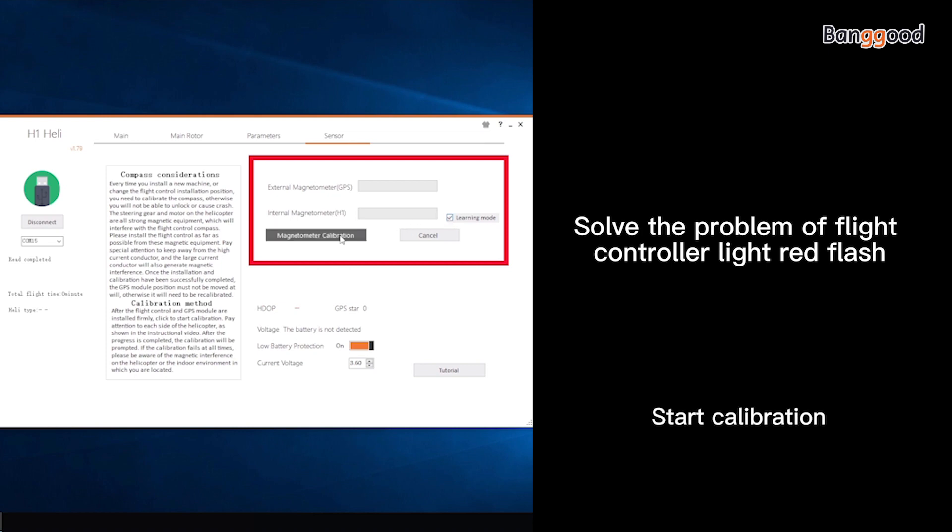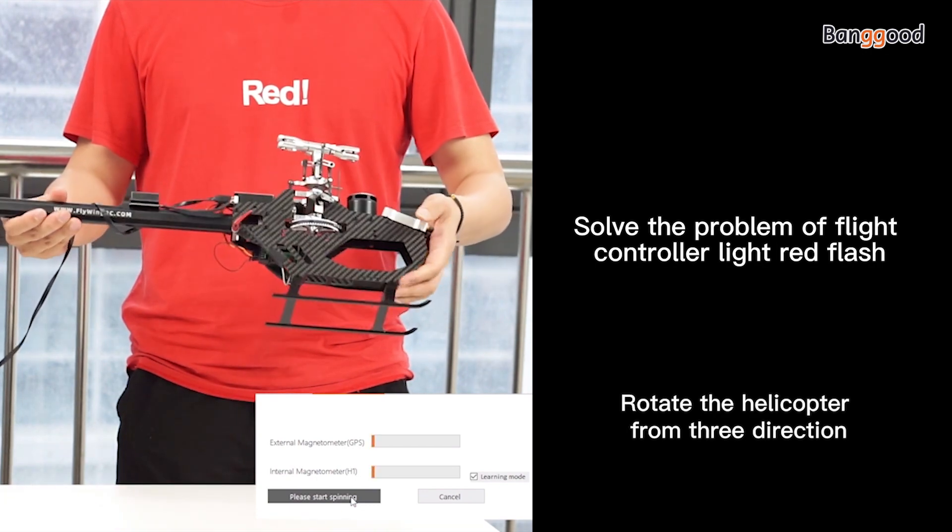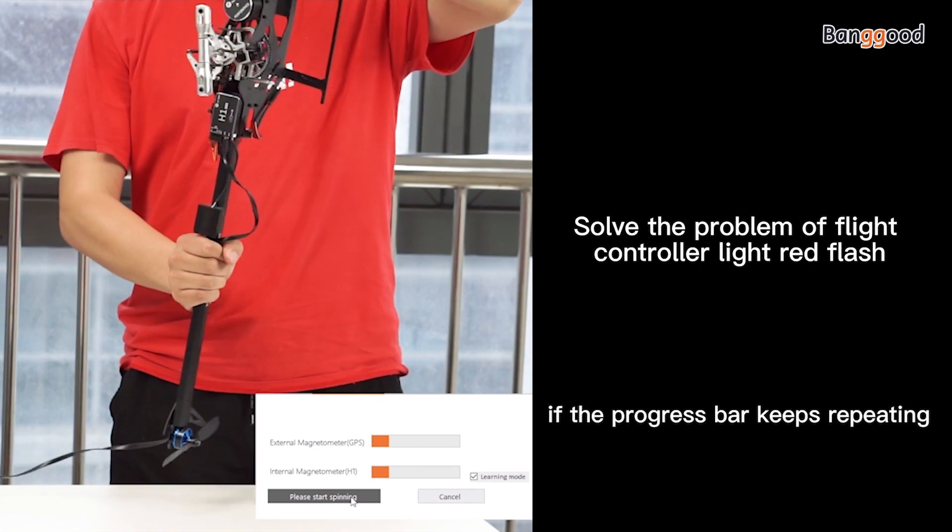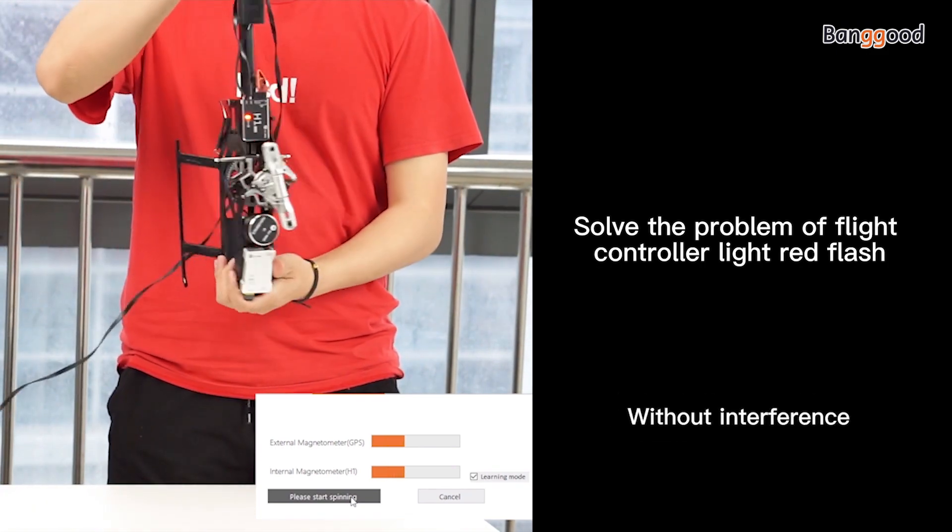Start calibration. Rotate the helicopter from three directions. If the progress bar keeps repeating, please recalibrate or calibrate on a place without interference.